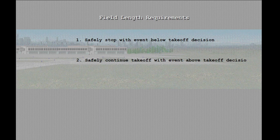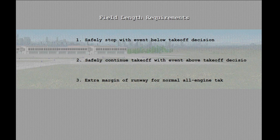The second requirement addresses the case where an engine failure occurs after the takeoff decision speed V1, and therefore braking action cannot be initiated at or before V1. In this case, the crew must be able to safely continue the takeoff. The third and final field length requirement addresses the normal all-engine takeoff. In this case, there must be an extra 15 percent margin of runway available over the actual takeoff distance.